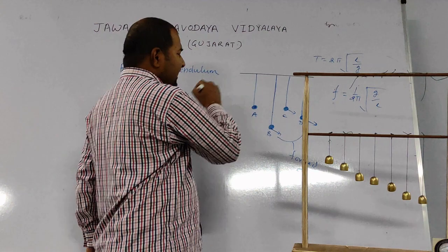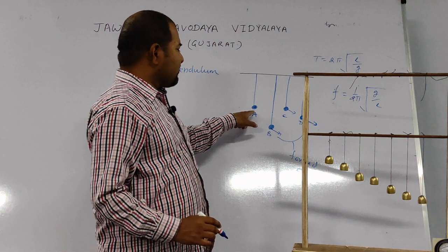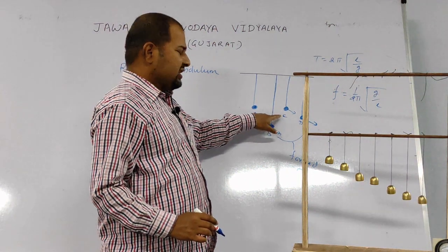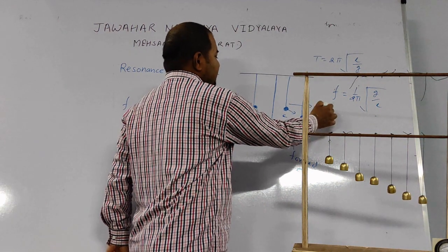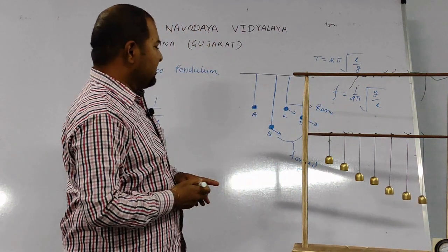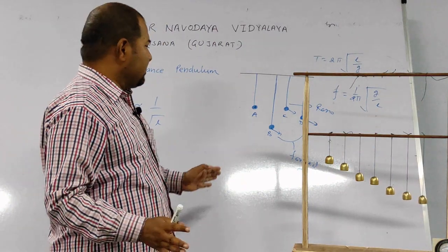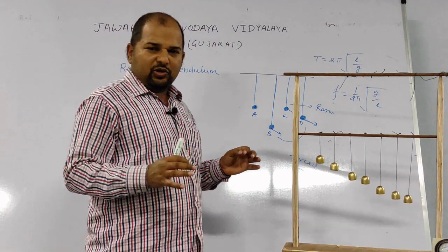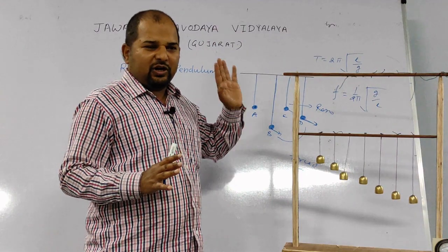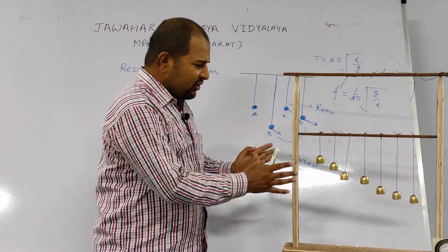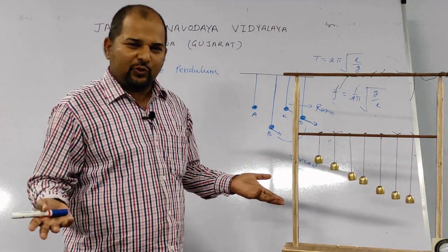But A and C have the same length, so the vibration of C is known as resonance vibration. In this case, C will oscillate with a larger amplitude in comparison to the others. We perform an experiment with this pendulum. You can also make a small pendulum like this, and it can be used to decorate your house.